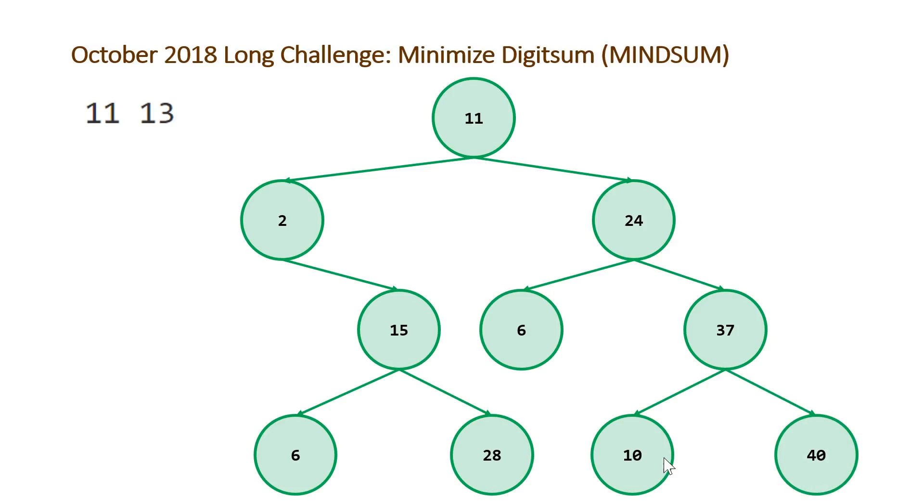So one more digit sum of this 10 would get us to 1, which is going to be our minimum number. So our answer is going to be 1, and then we need to output the number of steps, which will be 1, 2, 3, and then the fourth one that we're not showing here on the screen just due to space constraints.